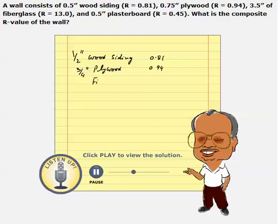Whereas the fiberglass, each inch has an R value of 3.7. We are using 3 1/2-inch. So 3 1/2 times 3.7 would give us about 13 R value.